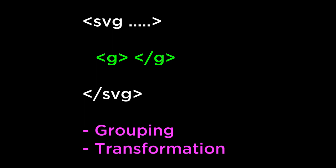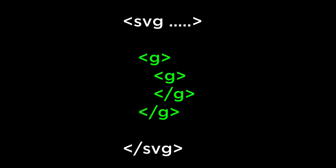Two: to define a new coordinate system for the set of SVG elements by applying a transformation to each coordinate specified in this set of SVG elements. When you use a group element, it can be for one reason, or the other, or both. You can also group elements within other group elements.